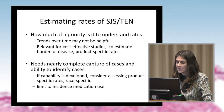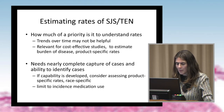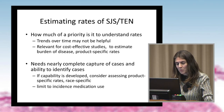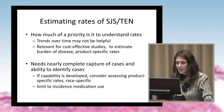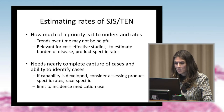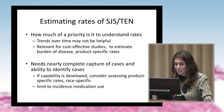If we can develop this capability, we can consider assessing product-specific rates and perhaps race-specific rates, which may be very helpful and informative. It would be important to restrict this type of study to new users of a drug, since prevalent users may no longer be at risk for SJS or TEN if they have been using a drug for years.